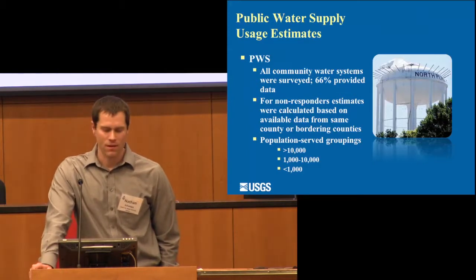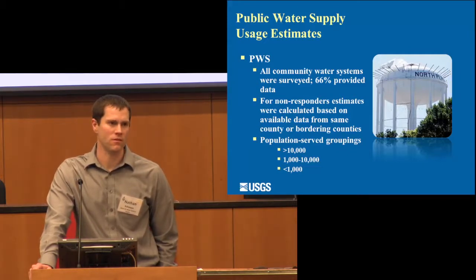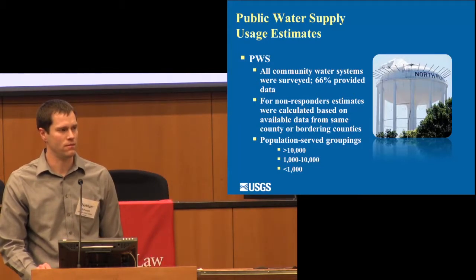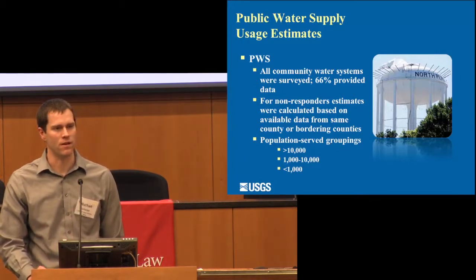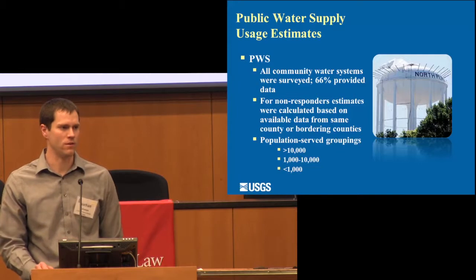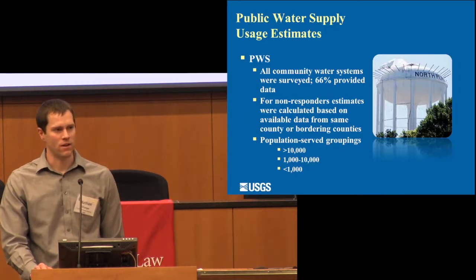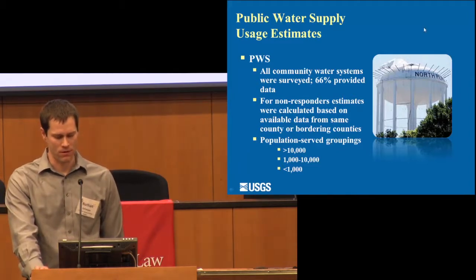For public supply, with Pat O'Brien's help we surveyed all community water systems throughout the state and achieved a 66% return rate, which was pretty good. For non-responders, we had to estimate withdrawals based on systems that did report within the same county. If we didn't have enough county data, we used bordering counties and grouped them by city population size, because a smaller town won't have the same kind of users as a larger city like Lincoln.